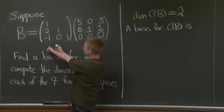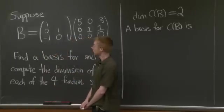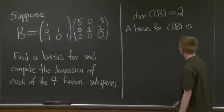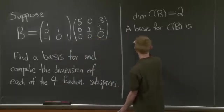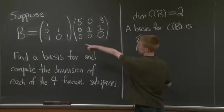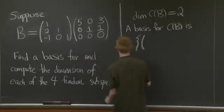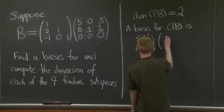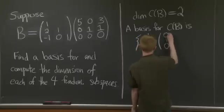You can also take the pivot columns in the L matrix. You can see by multiplying this out that it will amount to essentially the same thing. So a basis for this column space, I can just take these two pivot columns of my L matrix. 1, 2, minus 1, and 0, 1, 0.